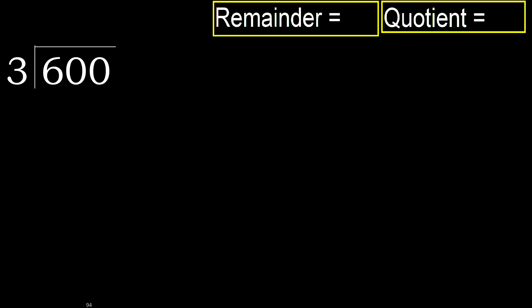600 divided by 3. 6 is not less, therefore with 6, 3 — multiply by which number is nearest, 2, 6, but not greater.